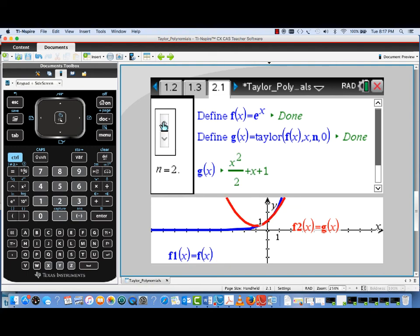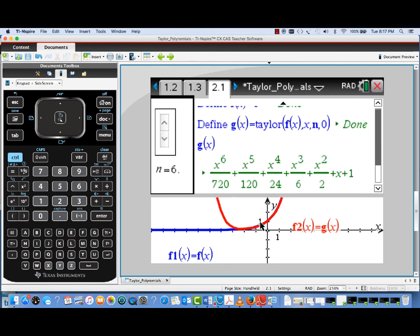Here's the quadratic approximation, both symbolically and graphically. It can move up to a cubic, quartic, and even higher degree. I'm going to go ahead and move the degree all the way up to six, and we'll see both the six-degree Taylor polynomial symbolically as well as its graph.